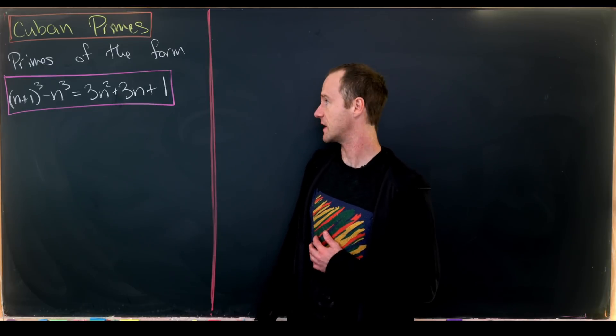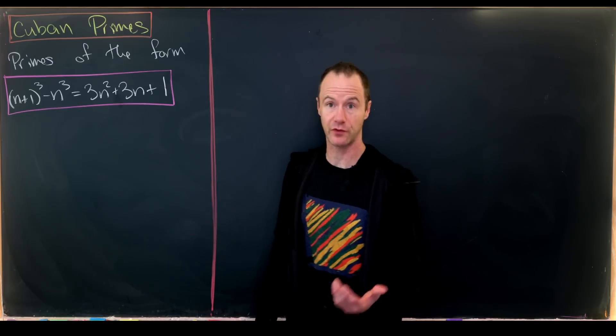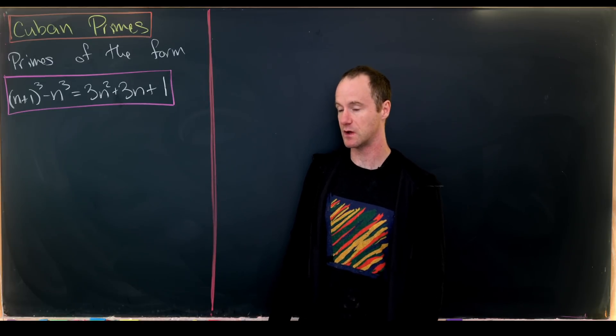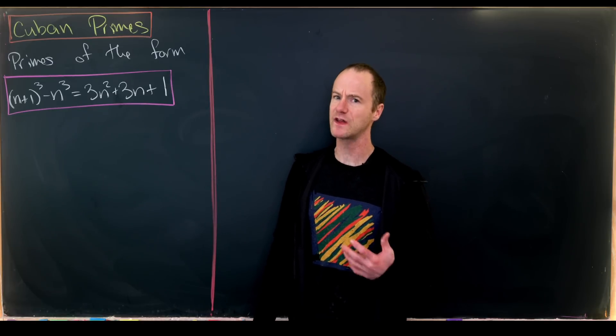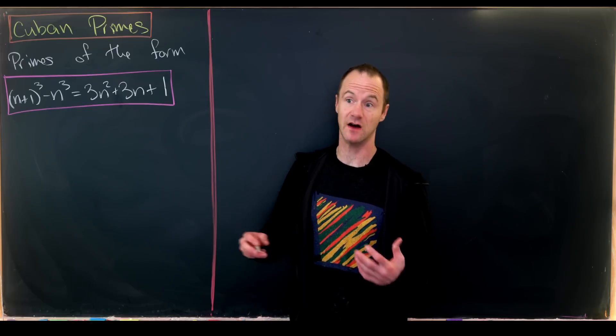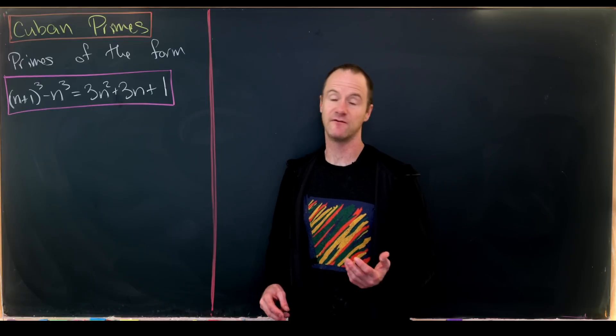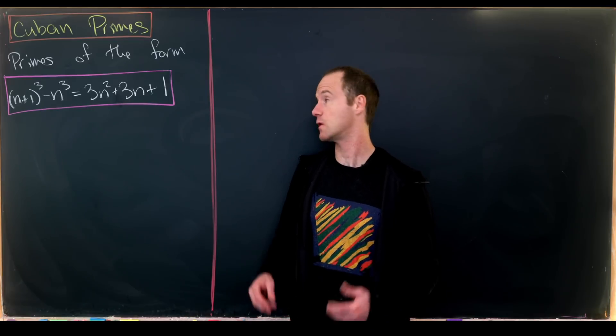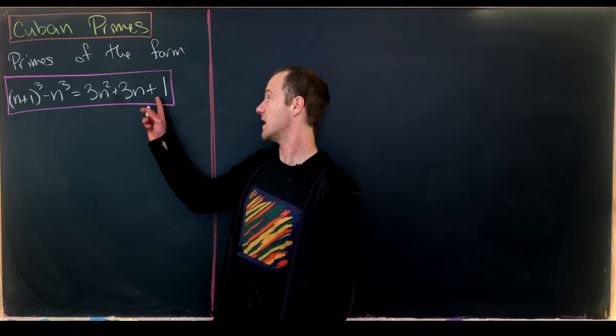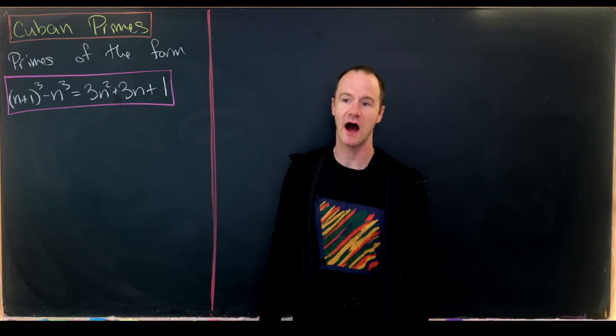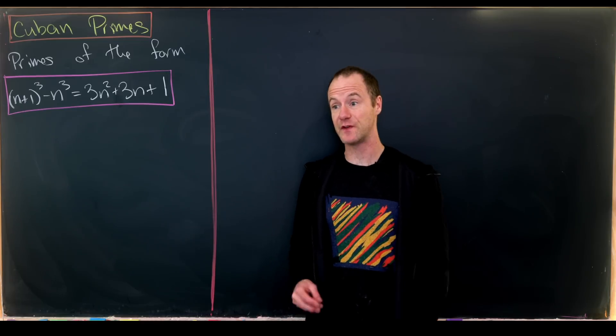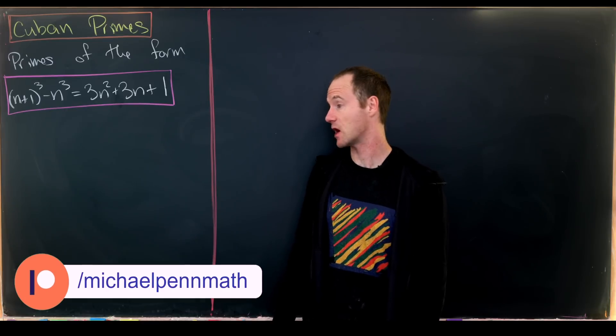So we're looking at primes of the form 3n² + 3n + 1. There are nice results for primes of linear forms like 4n + 3 or 5n + 1, but for primes of quadratic or higher order forms, there's no proof that there are infinitely many such primes.